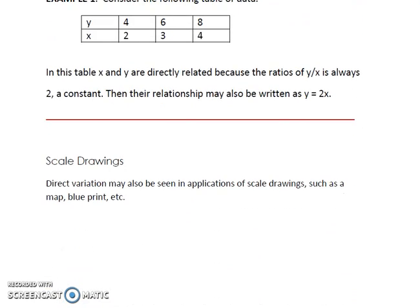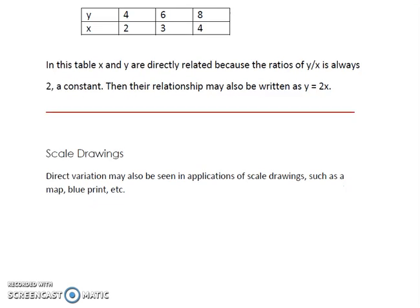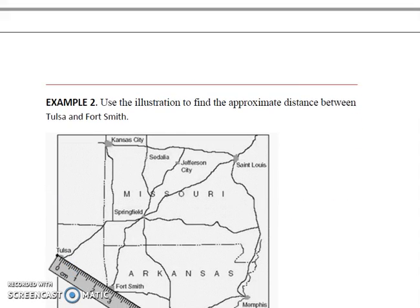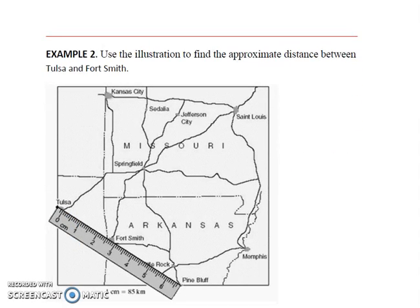Scale drawings. Direct variation may also be seen in applications of scale drawings, such as a map, blueprint, etc. Here's an example of a map. Let's use the illustration to find the approximate distance between Tulsa and Fort Smith.